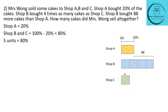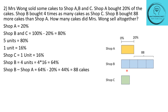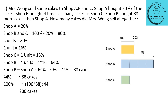Shop A is 20%, so shops B and C together have 100 − 20 = 80%. Five units (B = 4 units, C = 1 unit) equals 80%, so 1 unit = 16%. Shop C bought 16% and shop B bought 4 × 16 = 64%. Shop B bought 88 more cakes than shop A: 64% − 20% = 44%, so 44% = 88 cakes. Therefore 100% = 100 × 88 ÷ 44 = 200 cakes. Mrs. Wong sold 200 cakes altogether.